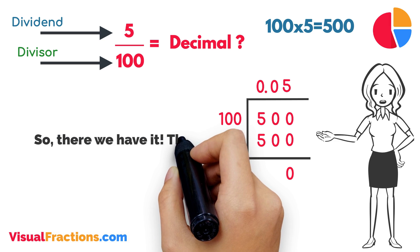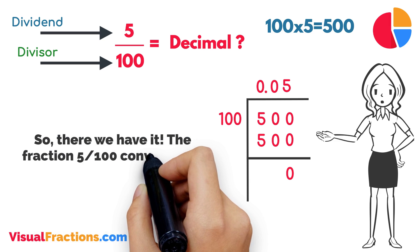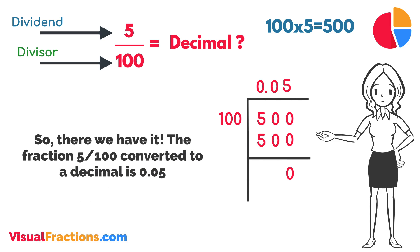So, there we have it. The fraction 5/100 converted to a decimal is 0.05.